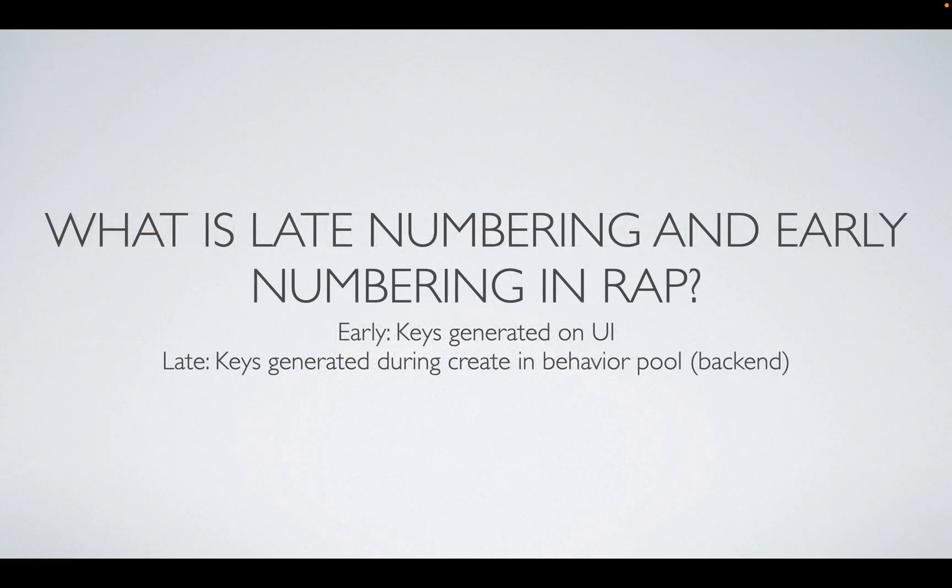What is late numbering and early numbering in RAP? Early numbering is where keys are generated on the UI or front end before saving. Late numbering is where keys such as UUIDs are generated during the create operation in the behavior pool in the backend.